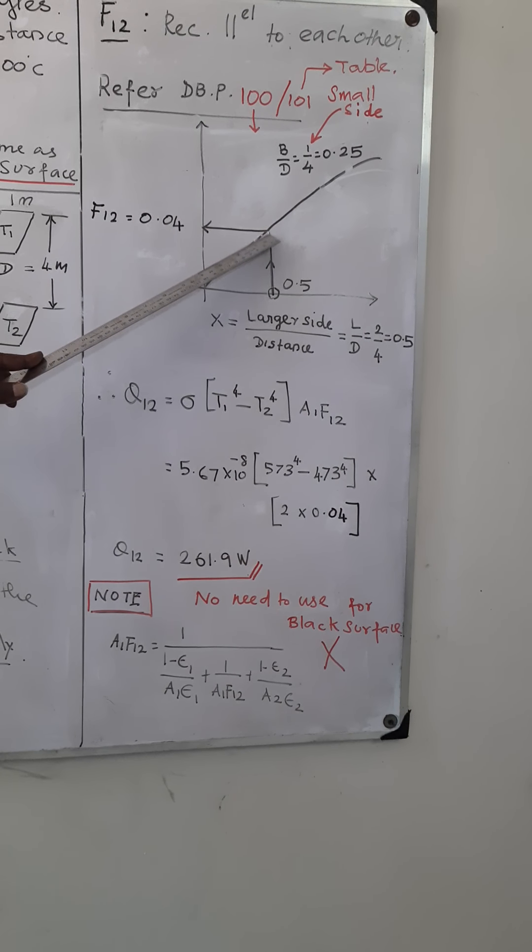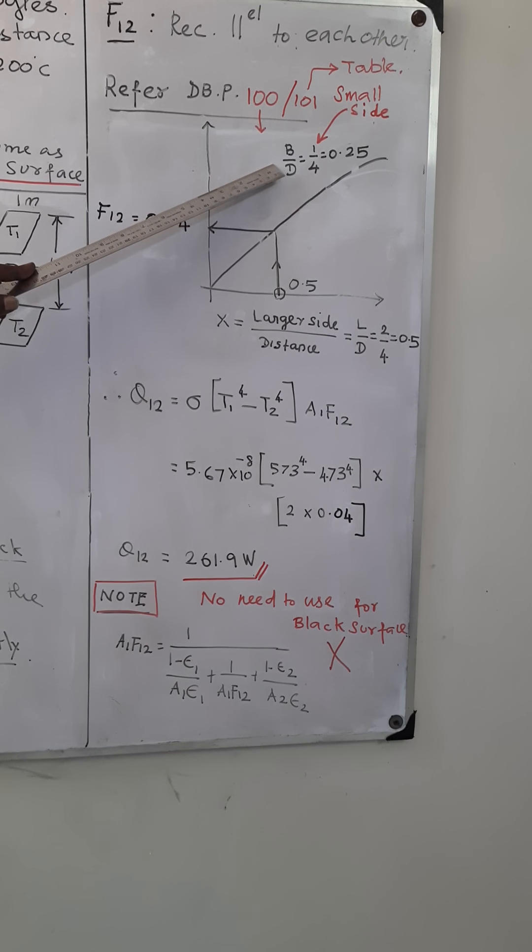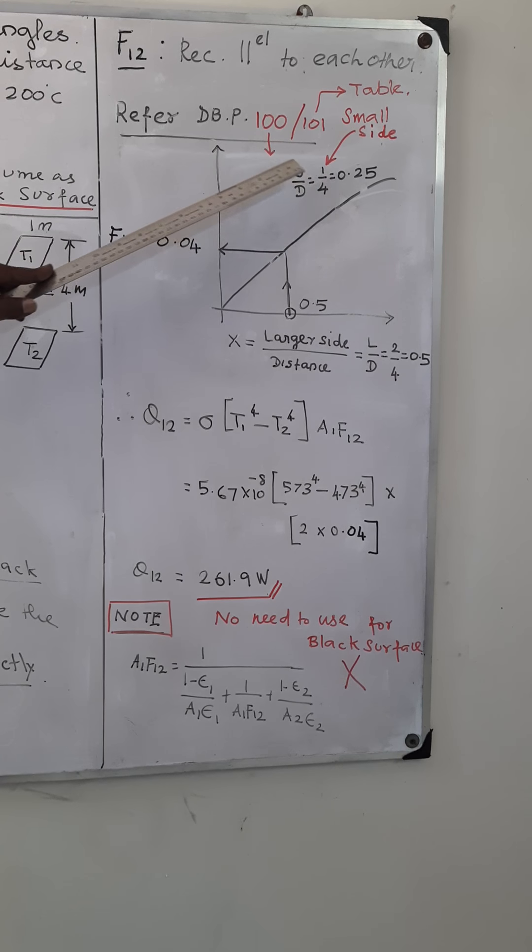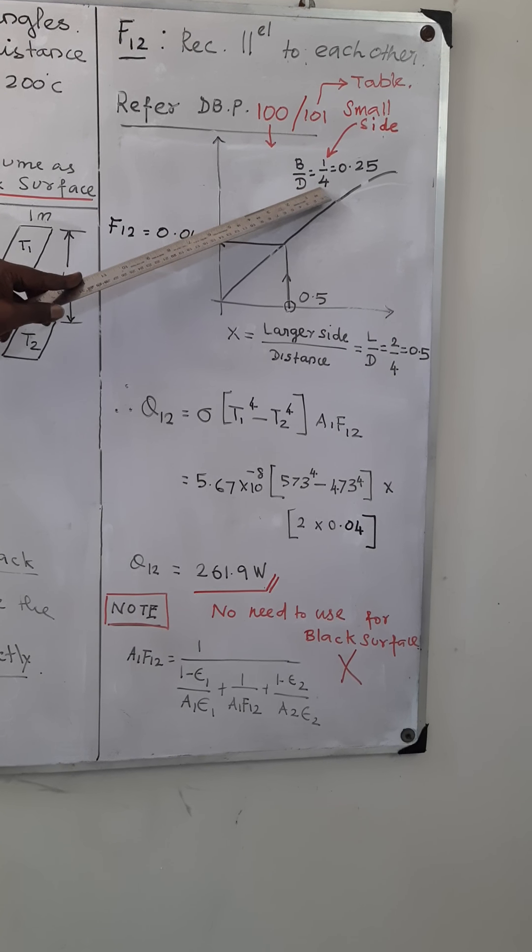Go vertically upwards until you get B/D. What is B/D? B is the smaller side divided by distance. Smaller side is 1 meter, divided by distance 4, so you will get 0.25.